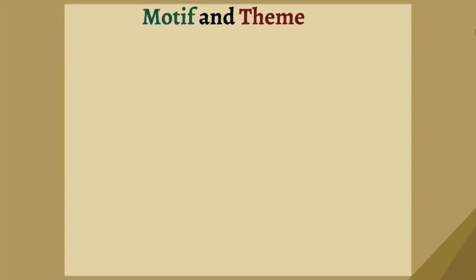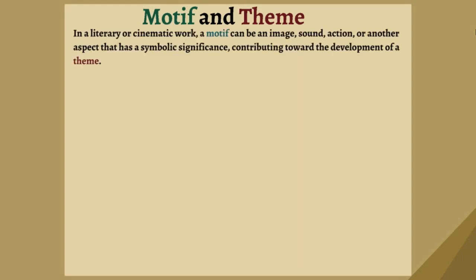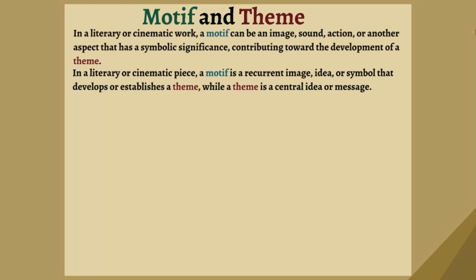There's also an important distinction between motif and theme. Some people confuse the two, especially when they use one word to describe themes. In a literary or cinematic work, a motif can be an image, sound, or action that has symbolic significance contributing toward the development of a theme. Like in music, motifs are the repeating aspects that come up again and again. In film and cinema, a motif is typically a recurring image, idea, or symbol that develops or establishes the theme, while the theme is the central idea or message. The motif can lead us to a theme, but it isn't the theme itself.